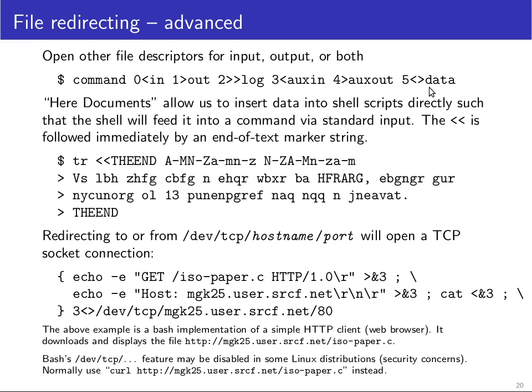It's also possible — particularly useful for shell scripts — to connect standard input with the current file so that it reads the next few lines of input directly from the script. This is done with a double less-than sign and is known as a here document. You write the input of a command directly after the command, and the double less-than sign is followed by a string that marks the end of the here document.